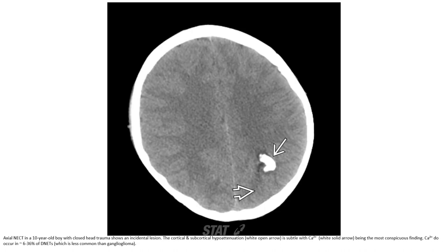Non-contrast CT of a 10-year-old boy with seizure. Hypodense and subtle hypodense alteration is subtle with calcification, making it the most conspicuous finding. Calcification does occur in 6 to 36 percent of DNETs, which is less common than ganglioglioma.